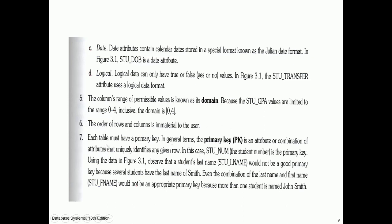The order of rows and columns is immaterial to the user. Each table must have a primary key — an attribute or combination of attributes that uniquely defines any given row. In this case, student number is the primary key. Student last name would not be a good primary key because several students share the last name Smith, and even the combination of last name and first name would not work because more than one student is named John Smith.